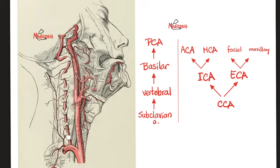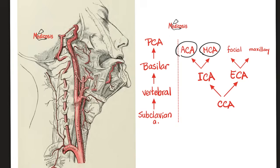From the subclavian artery we see the vertebral artery, which passes through the foramen transversarium of C6, C5, C4, C3, C2, and C1 — but not through C7's transverse foramen. The anterior circulation of the brain is supplied by the internal carotid, whereas the posterior circulation is supplied by the vertebral artery. Two vertebral arteries join to give the basilar artery. The basilar artery's final branches are the posterior cerebral arteries. So: ACA and MCA come from the internal carotid; PCA comes from the basilar, which came from the vertebral.